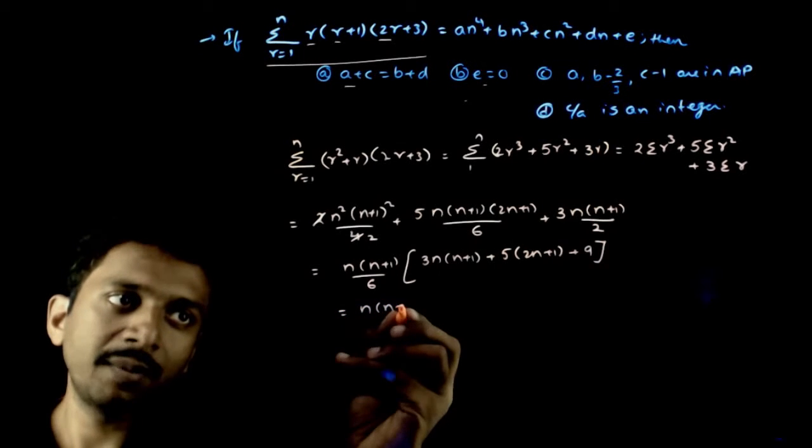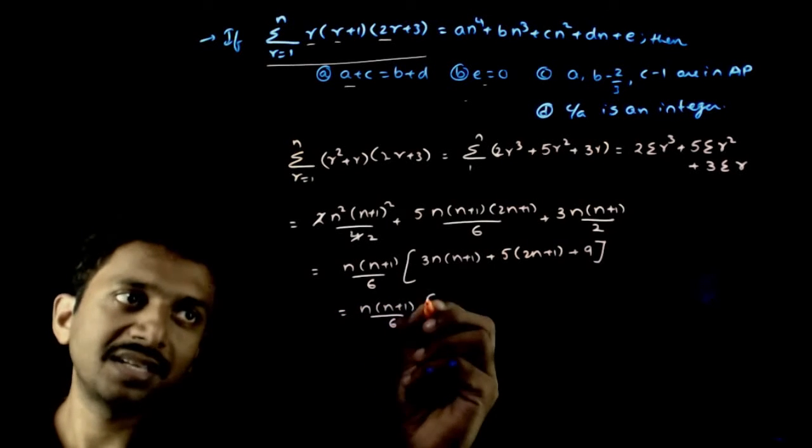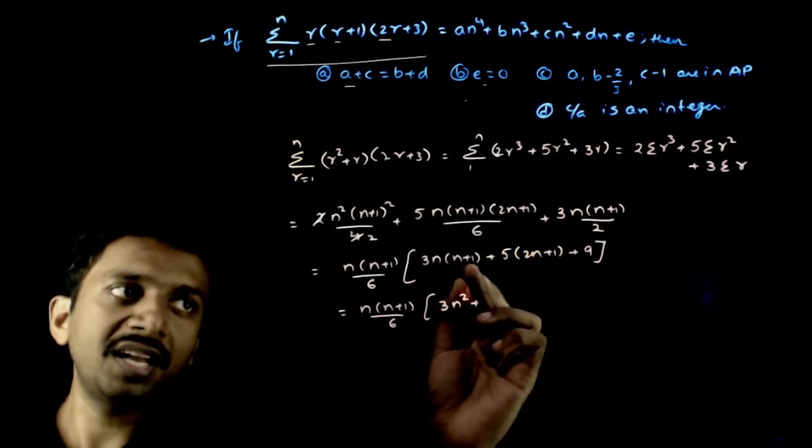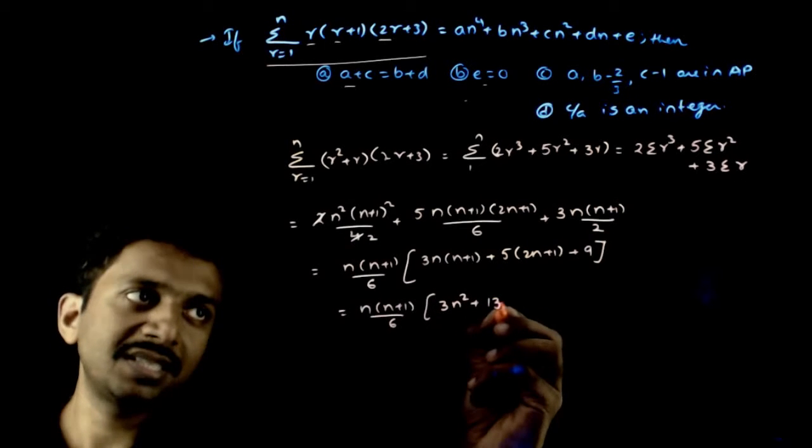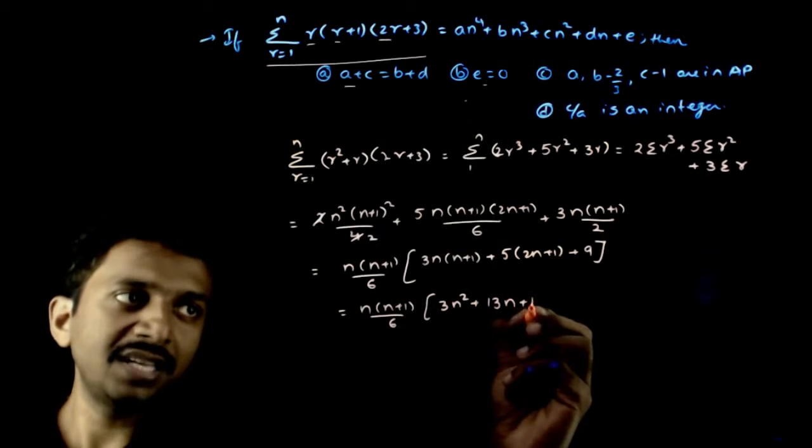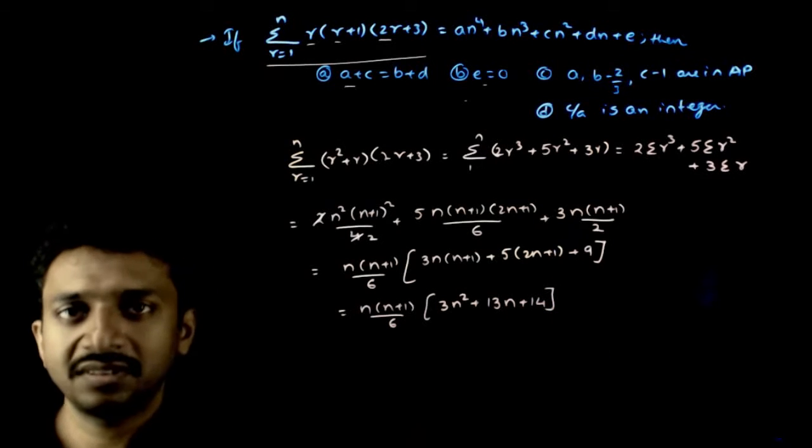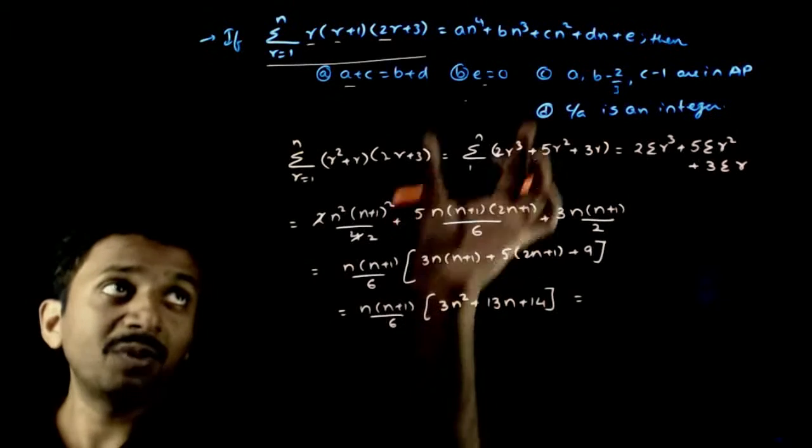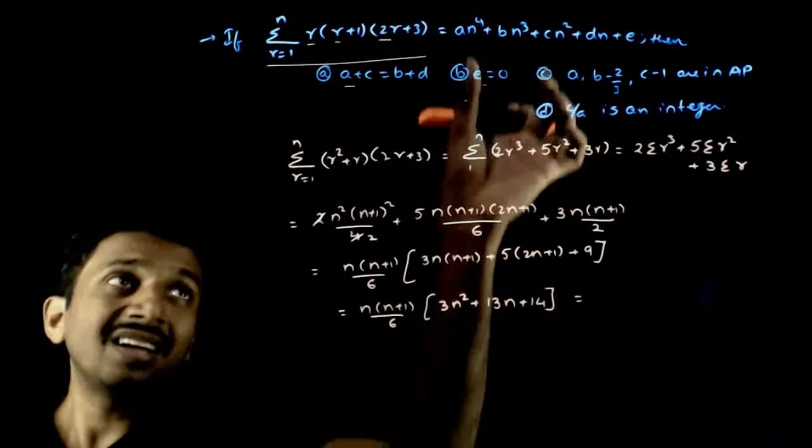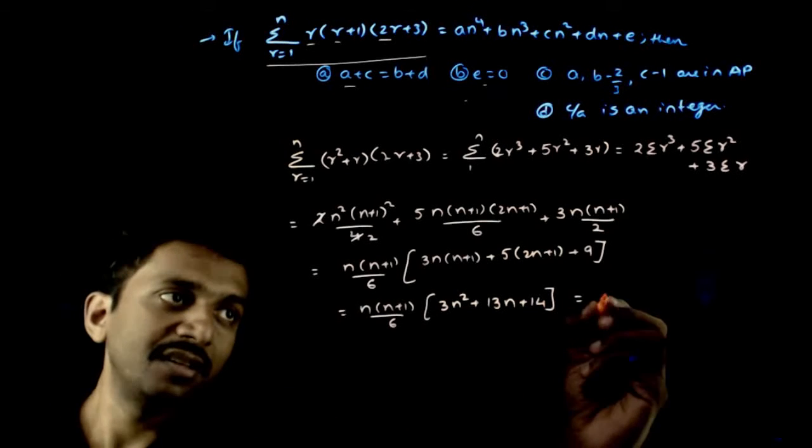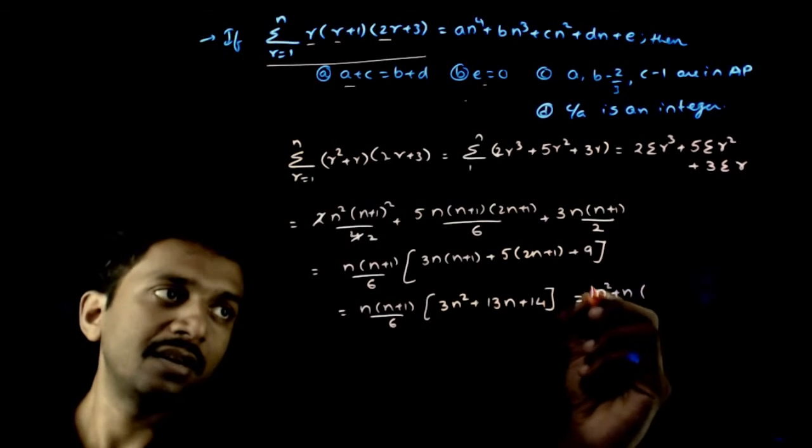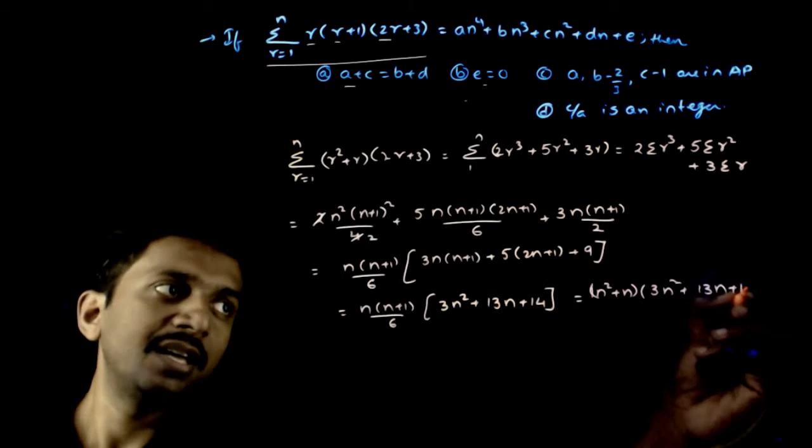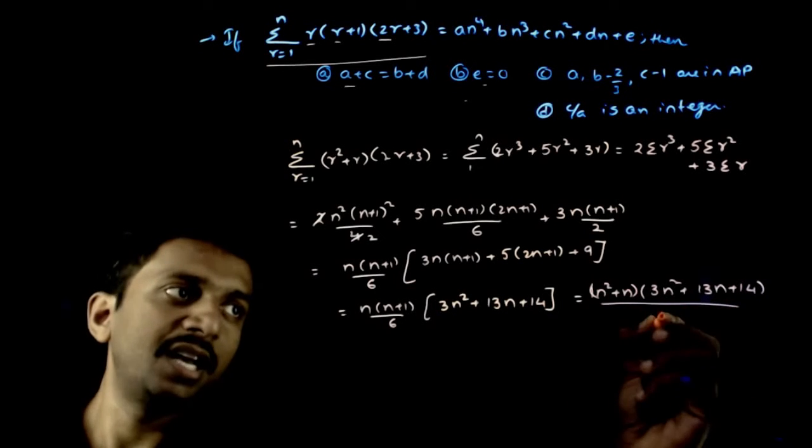That equals n into n plus 1 by 6 into, if you expand this, you get 3n square plus 3n, here 10n plus 13n plus 5 plus 9 is 14. Now that equals n square plus n times 3n square plus 13n plus 14 divided by 6.